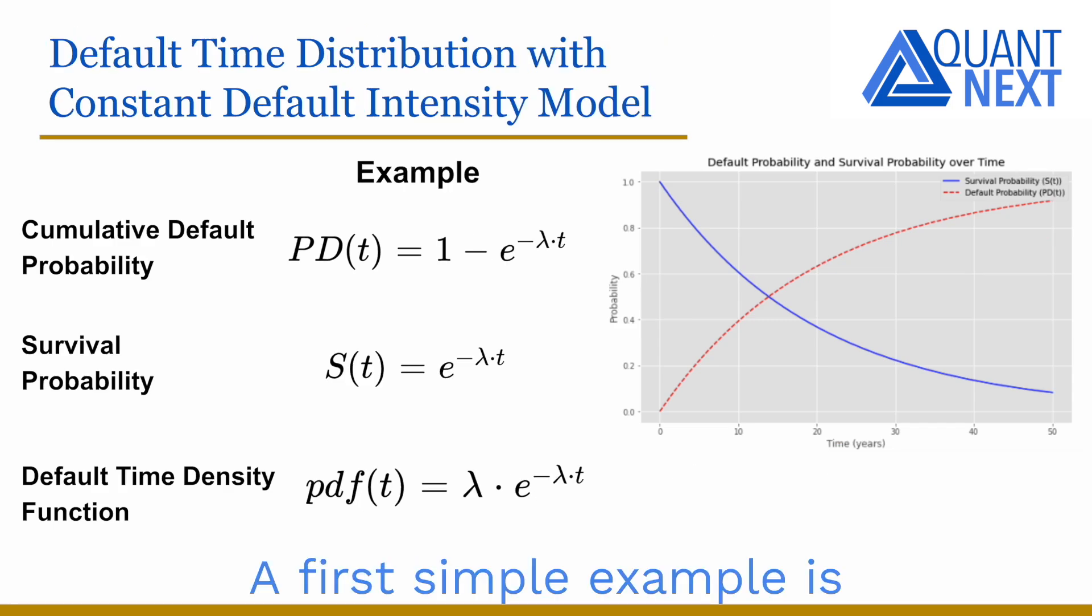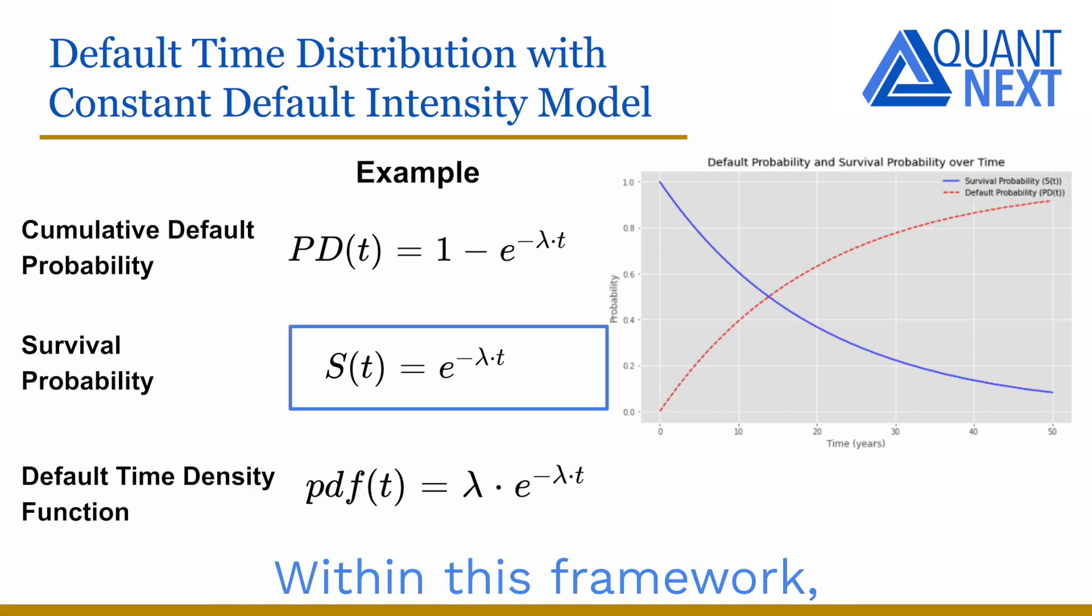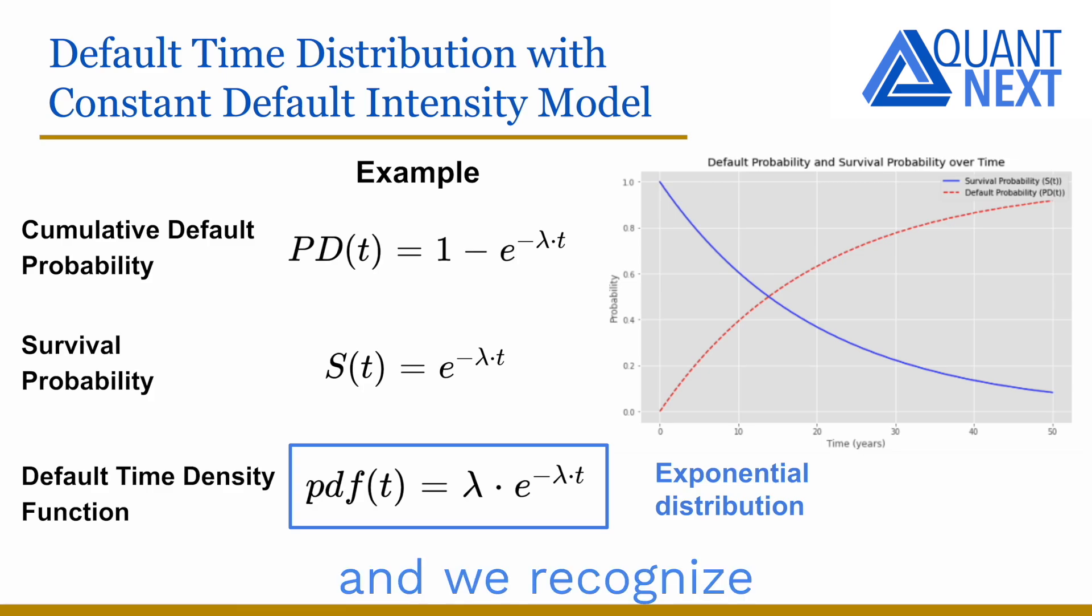A first simple example is the default time distribution with a constant default intensity model. Within this framework, the survival probability is equal to the exponential of minus lambda t. And we recognize the probability density function of an exponential distribution with lambda the parameter of the distribution.